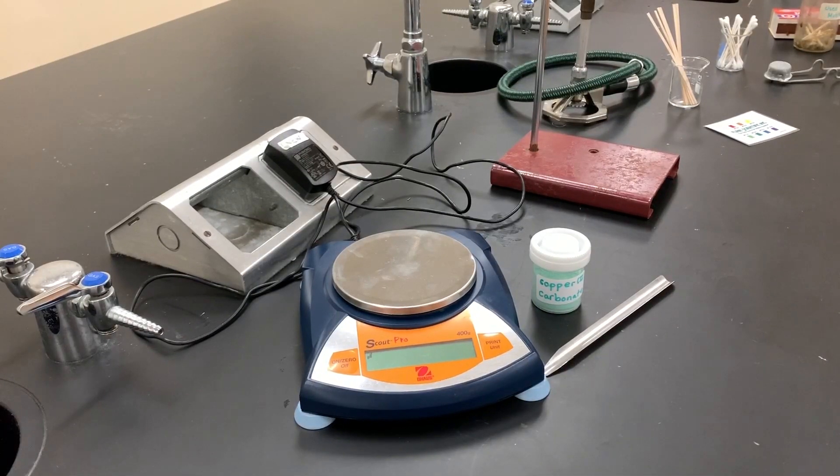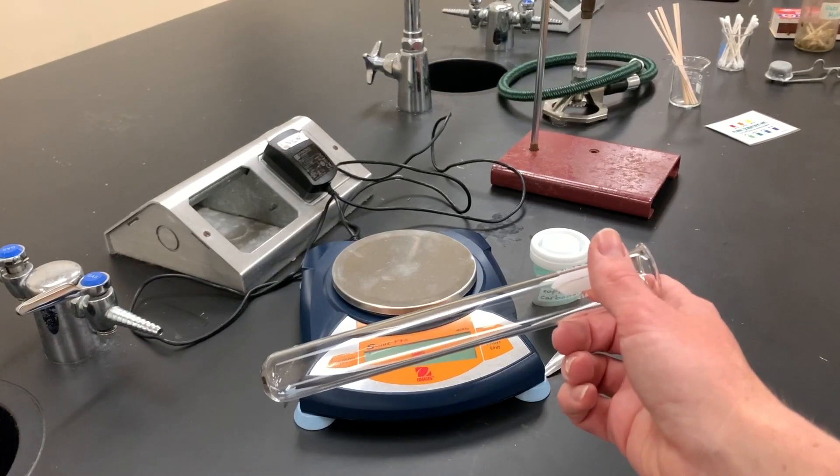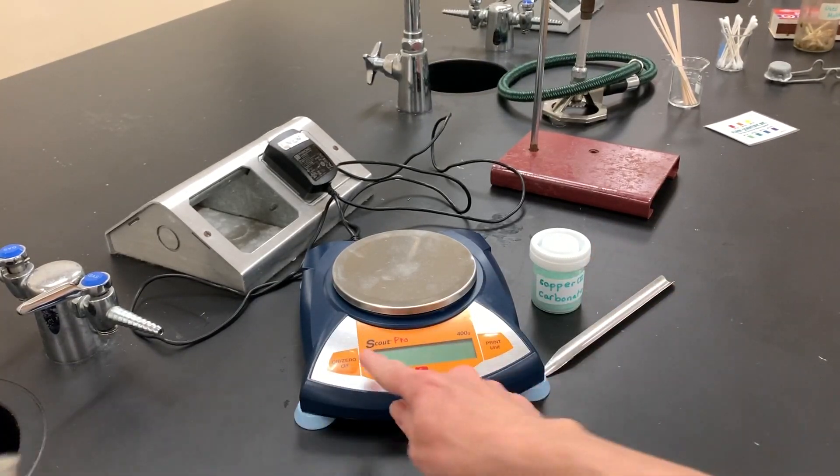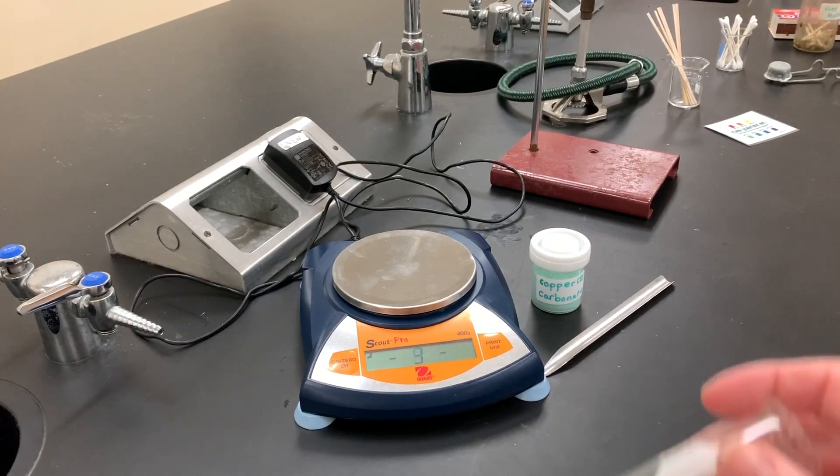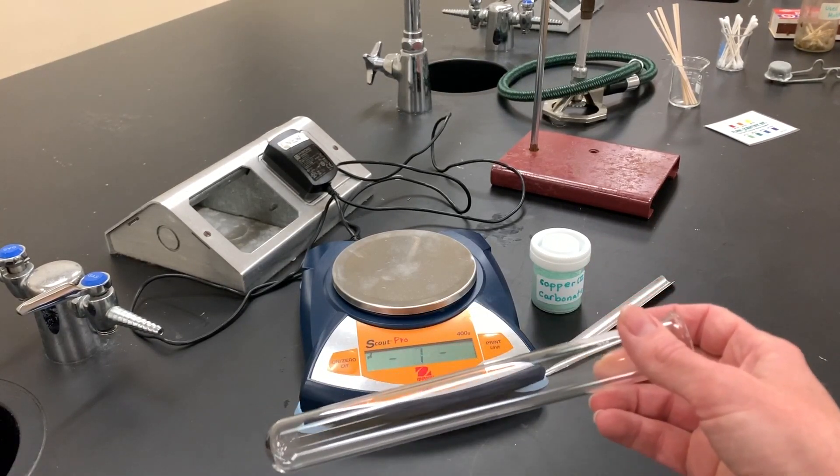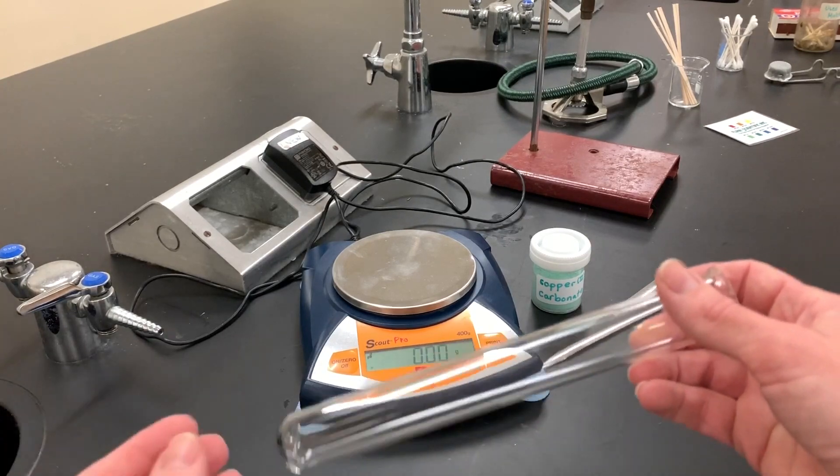The first step to starting this lab is to grab your test tube. It should be clean and dry. Turn on your electronic balance, let it go to zero, and make sure that it says grams.